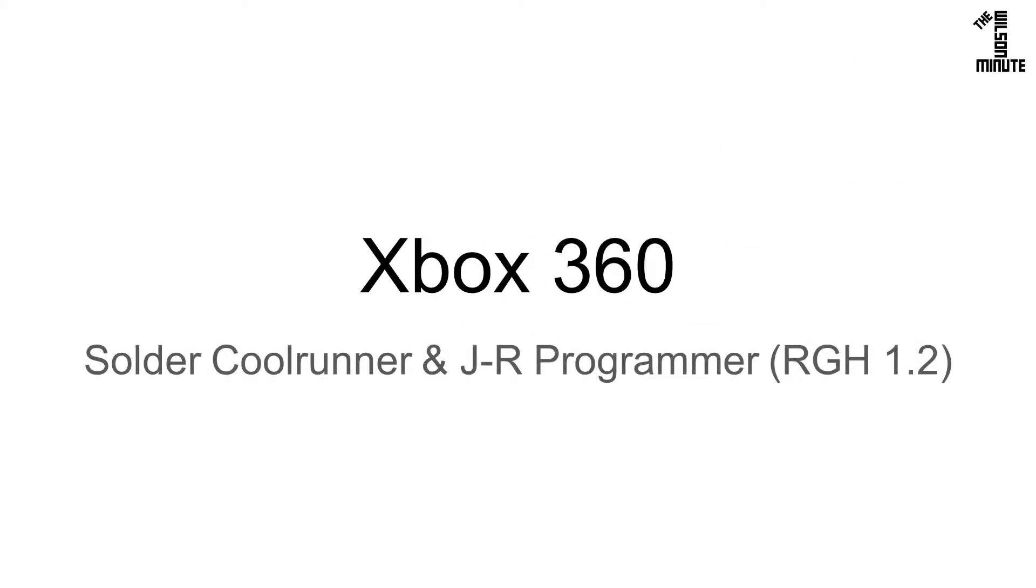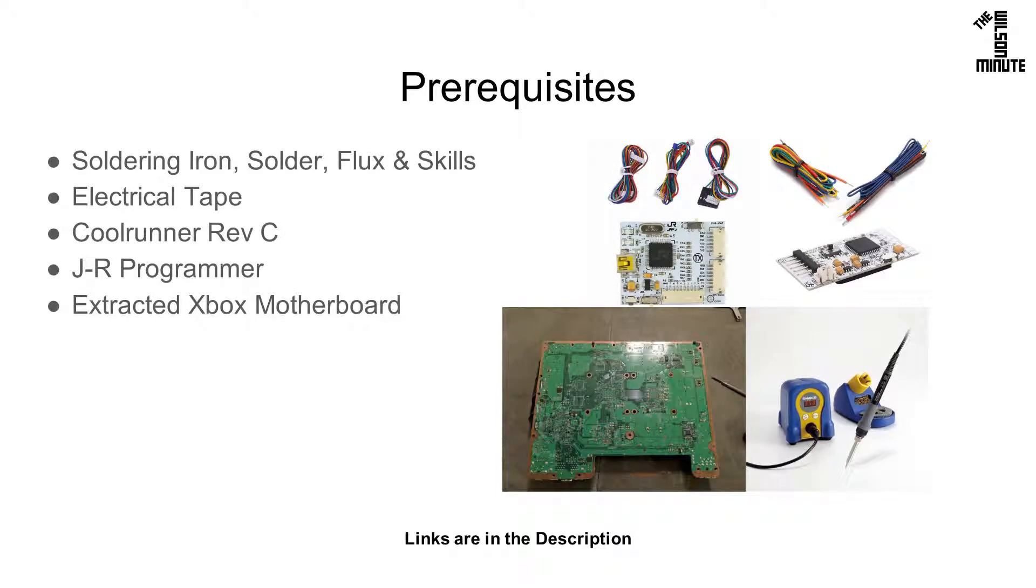Today we will solder in a CoolRunner and JR programmer for RGH 1.2. For this, you will need a decent soldering iron with solder and flux. This isn't for the faint of heart, so if you need it, get some practice first.